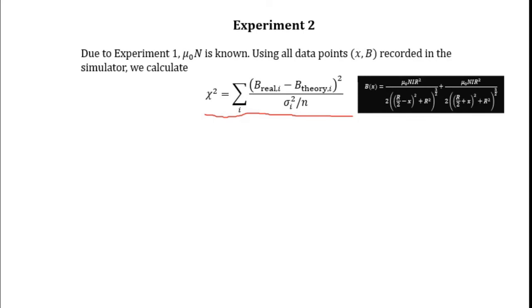Here, the theoretical value of B, or B theory, for each data point can be calculated by substituting the corresponding value of x into B(x).